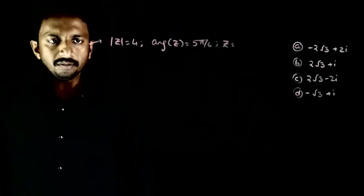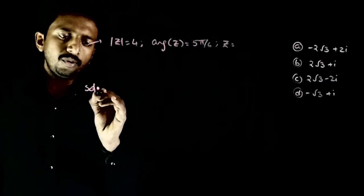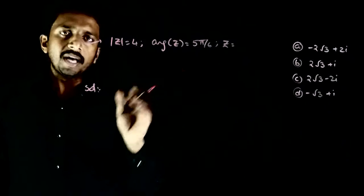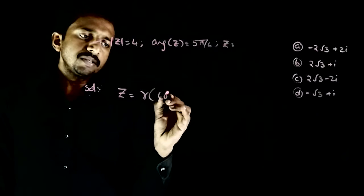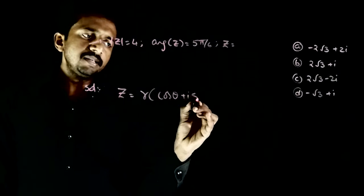It is a very straightforward question. If you know the modulus of a complex number and argument of a complex number, then z will be equal to r into cos θ plus i sin θ.